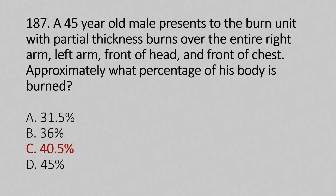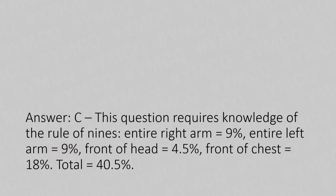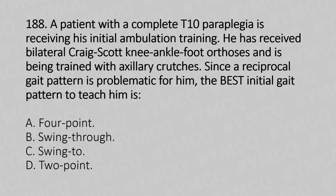The answer is Option C: 40.5%. The explanation requires knowledge of the rule of nines. The right arm is 9%, the left arm is 9%, the front of the head is 4.5%, and the front of the chest is 18%. The total is 40.5%.